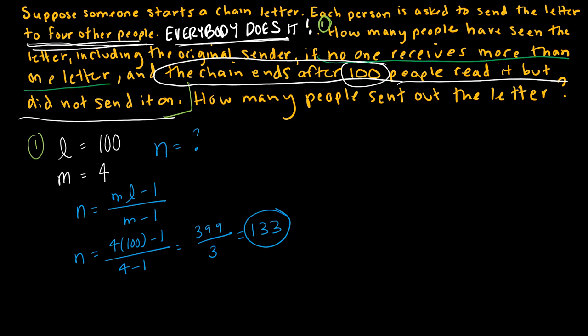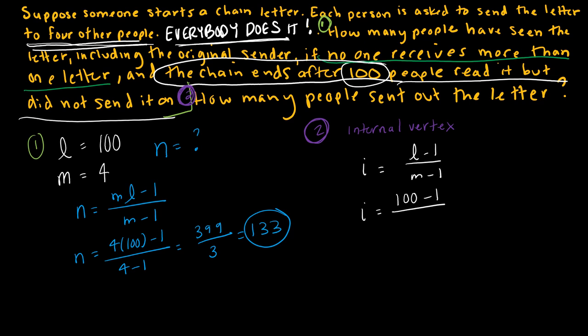Question two asks: how many people sent out the letter? In tree terms, those are the internal vertices — vertices that have children, meaning they sent the letter to others. Using i = (l − 1)/(m − 1) = (100 − 1)/(4 − 1) = 99/3 = 33. So 33 people sent out the letter.